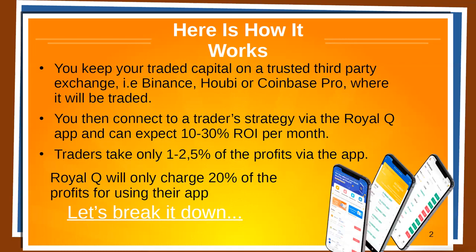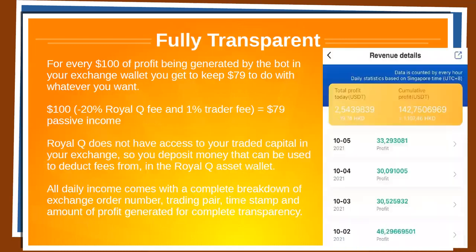Royal Q will charge a small fee of 20% for the benefit of using their app. So let's break it down, fully transparent: for every hundred-dollar profit generated by the bot in your exchange wallet, you get to keep 79 dollars. That's one hundred dollars minus the 20% Royal Q fee — which is 20 dollars — and then a one percent trader fee, which is one dollar. So you have 79% of passive income to do with whatever you want.